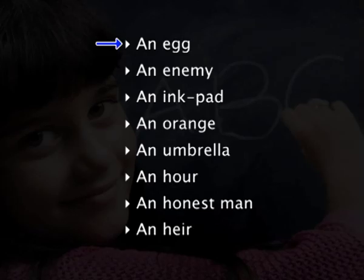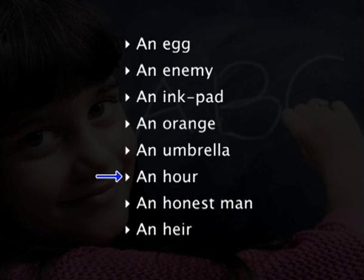Now let us look at the differences between the indefinite articles 'a' and 'an'. The choice between 'a' and 'an' is determined by the sound. Before a word beginning with a vowel sound, 'an' is used. For example: an egg, an enemy, an ink pad, an orange, an umbrella, an awa, an honest man, an air. The words 'awa', 'honest', and 'air' begin with a vowel sound as the initial consonant 'h' is not pronounced.